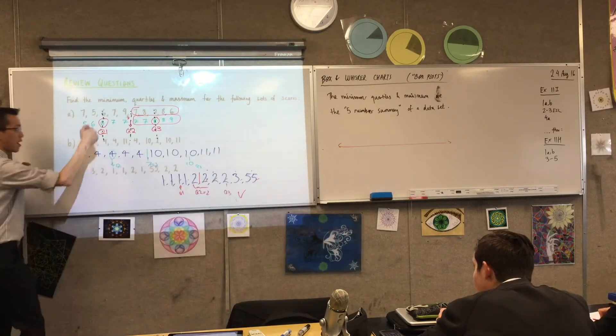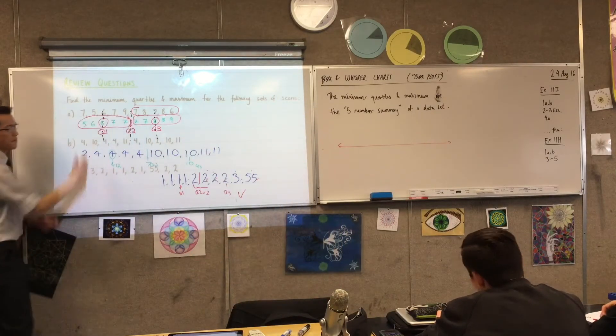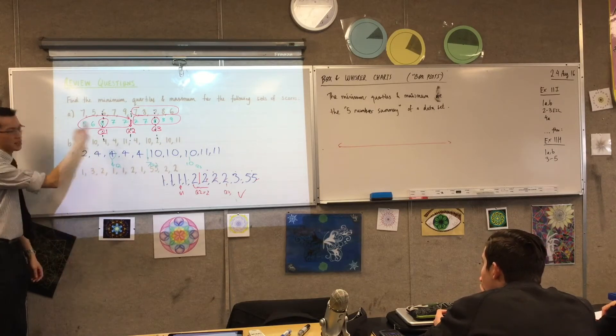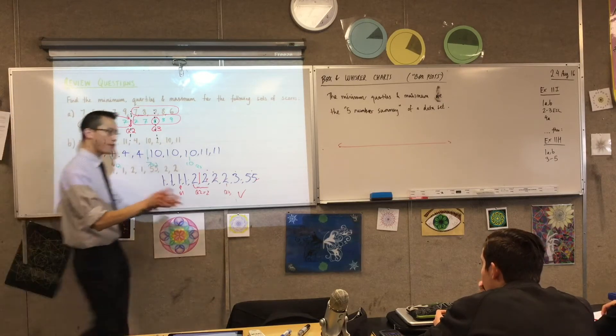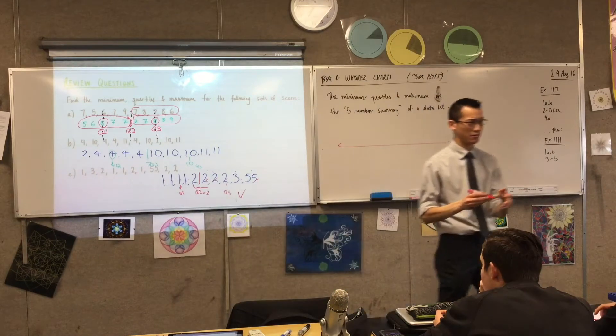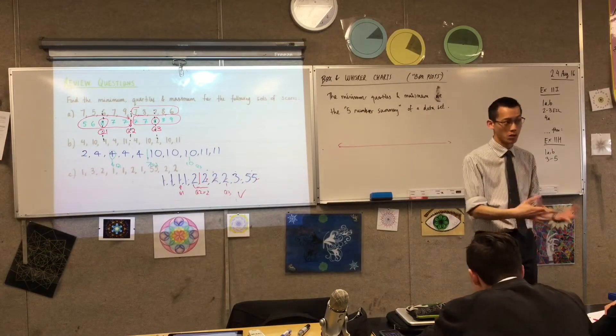And in the same way, you look at the bottom half of the scores, these guys, and then you find the median there, and that's your first quartile. So therefore, to find quartiles is really the same question as finding medians, you just have to do it more times.